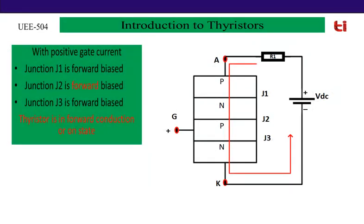Now, when a positive gate supply is connected, it repels the holes of the P-layer and attracts electrons from the N-layer. This positive gate supply attracts electrons from both N-layers, so electrons flow from the cathode N-layer toward the anode. As a result, junction J2 becomes forward biased due to the gate supply.